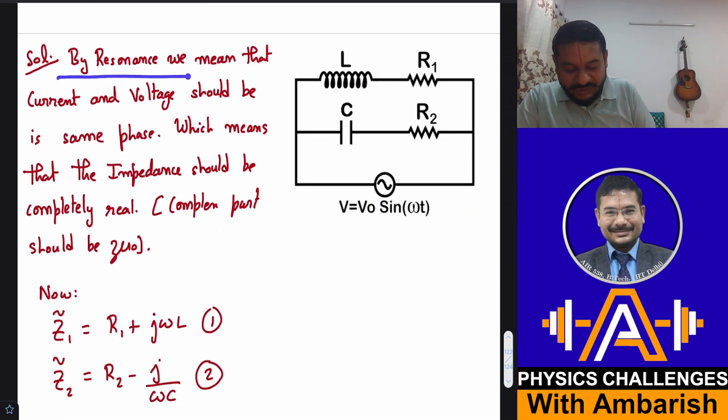So by resonance, we mean that the current and voltage should be in same phase, which means that the impedance should be completely real. If we are going by the complex number analysis, then impedance has to be real.